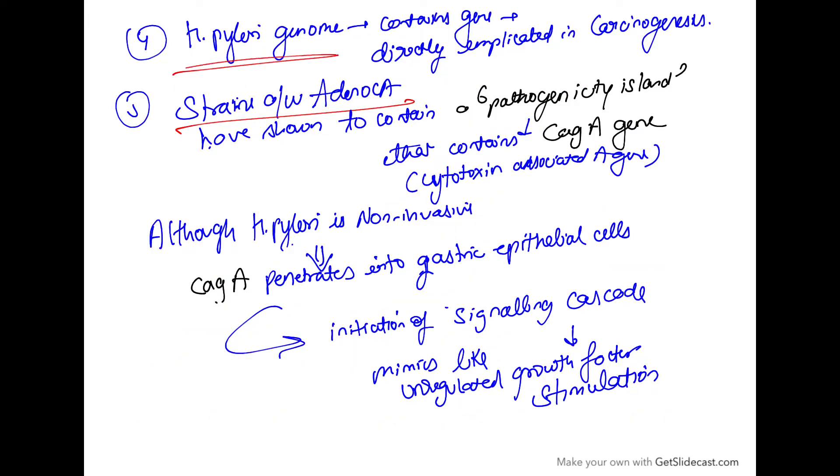Next, Helicobacter pylori genome. It contains a gene which is directly implicated in carcinogenesis and we have seen in the strains associated with adenocarcinoma, they have shown to contain a pathogenicity island and this pathogenicity island contains a CAG-A gene.